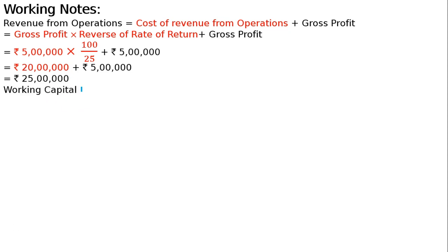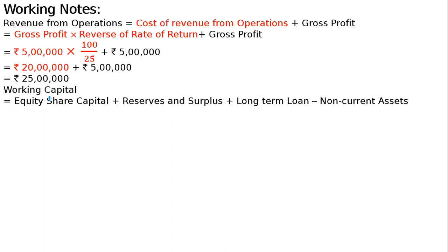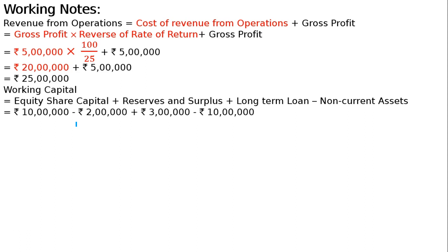Next, Working Capital. The formula is Current Assets minus Current Liabilities. Alternatively, Working Capital equals Equity Share Capital plus Reserve and Surplus plus Long Term Loans, minus Non-Current Assets. Putting in the values: 10 lakh minus 2 lakh plus 3 lakh minus 10 lakh of non-current assets, which equals 5 lakh.